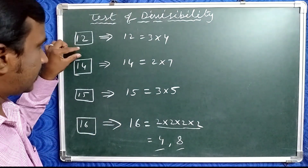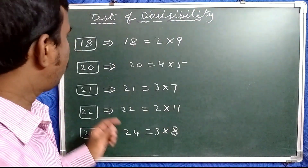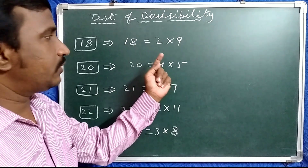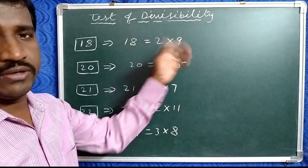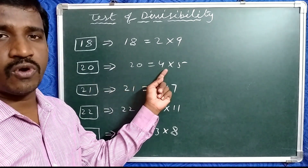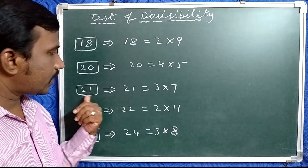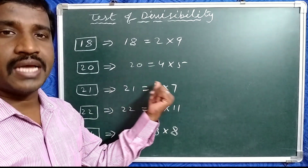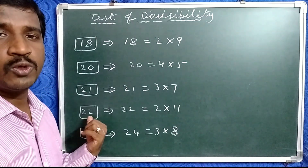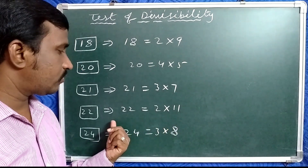Divisibility conditions for 13 and 17 will be shown in a separate video. Now, if a number is divisible by 18, it is exactly divisible by 2 and 9, because 18 equals 2 times 9. A number exactly divisible by 20 is divisible by 4 and 5, since 20 equals 4 times 5. If divisible by 21 — which equals 3 times 7 — it is divisible by 3 and 7. If divisible by 22, it is divisible by 2 and 11, since 22 equals 2 times 11.